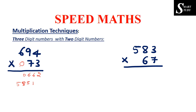The last step is multiplication of hundreds places. Since one of the two numbers is a two digit number, its hundreds place is 0. So 6 into 0 gives 0, and 0 is added directly to the carry of 5. So the final answer for 694 multiplied by 73 is 50,662.